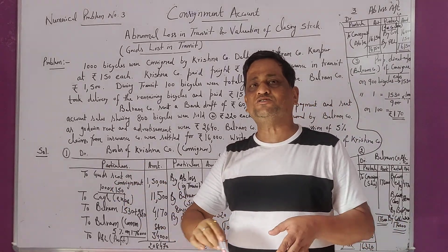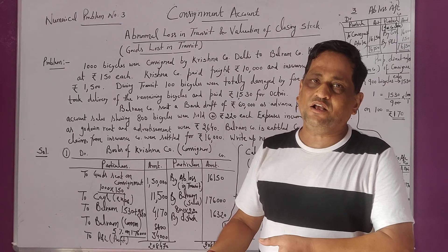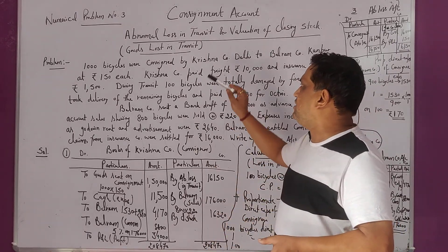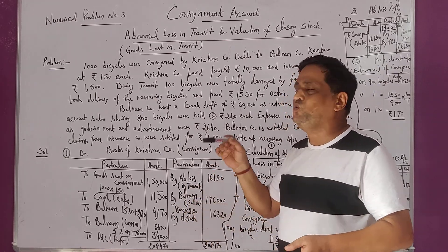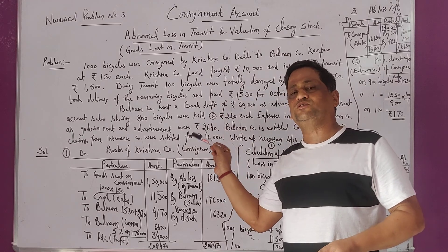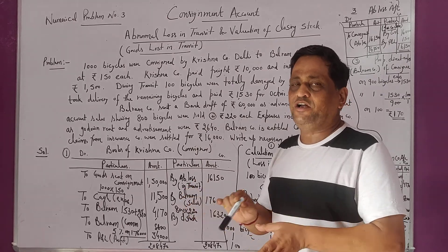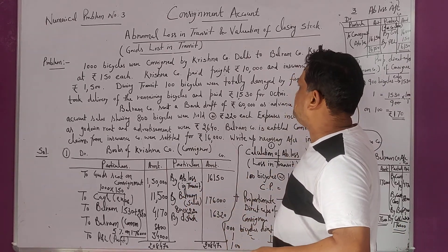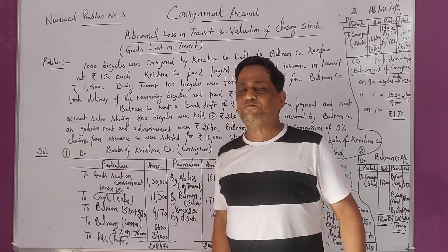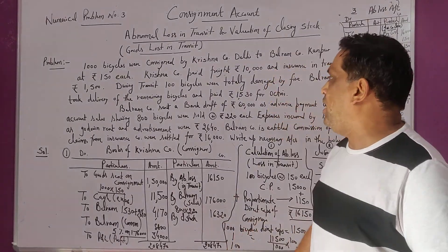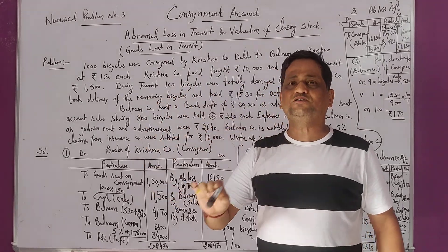Our business is being expanded from Delhi to Kanpur — ab Kanpur mein hum sale karne waale hain. Isliye Krishna ne apne Delhi se apne bicycle ko transport kiya to Balram Company of Kanpur. It is the expansion of business. Yeh business expand kar rahe hain. Jinki cost price given is Rs. 150 each. Yahaan pe 1,000 cycles bheji ja rahi hain.